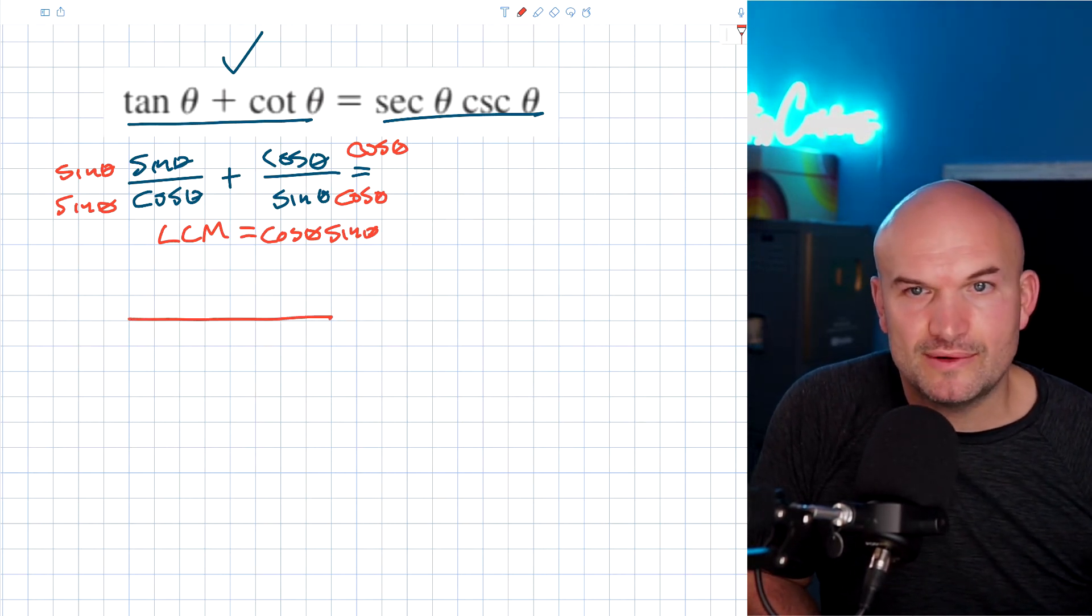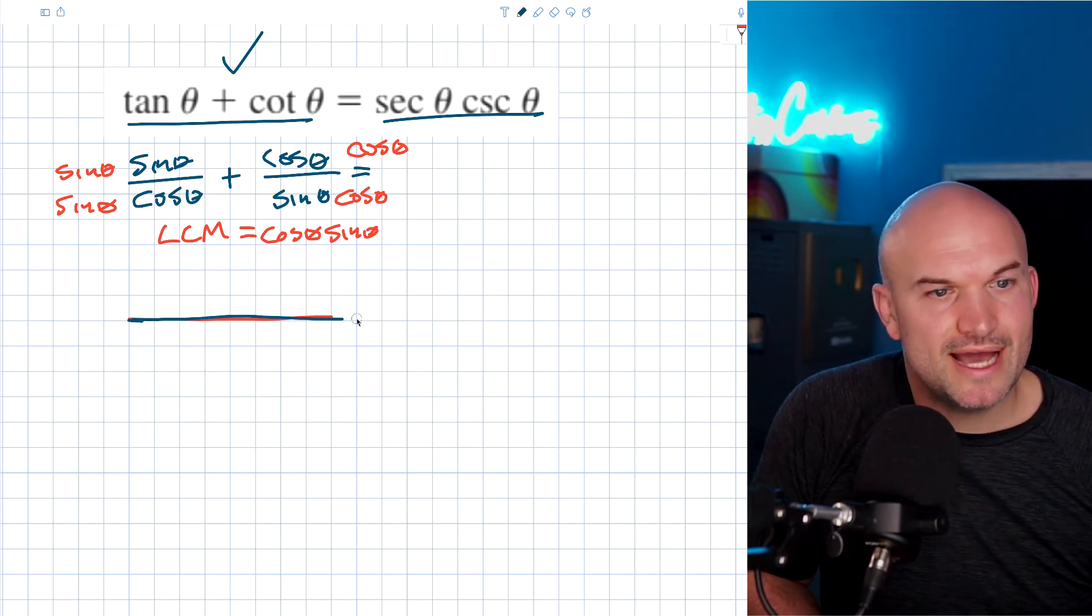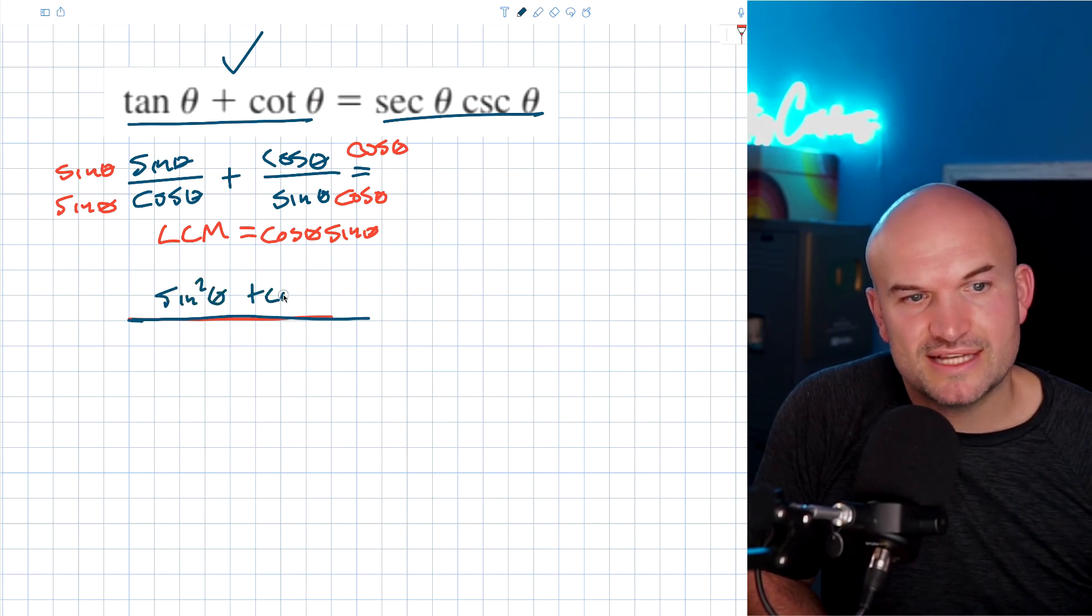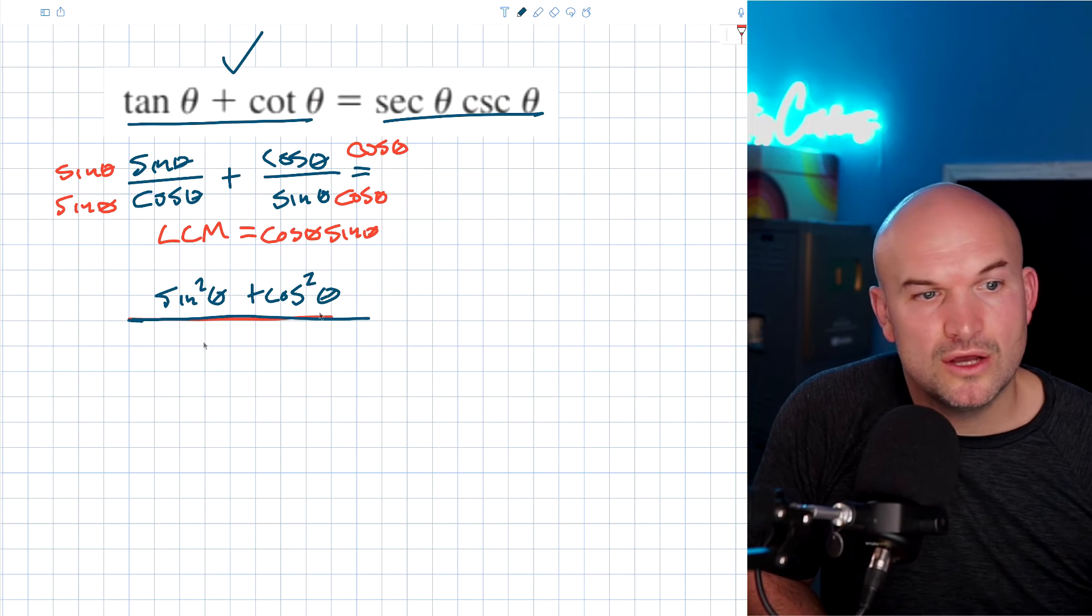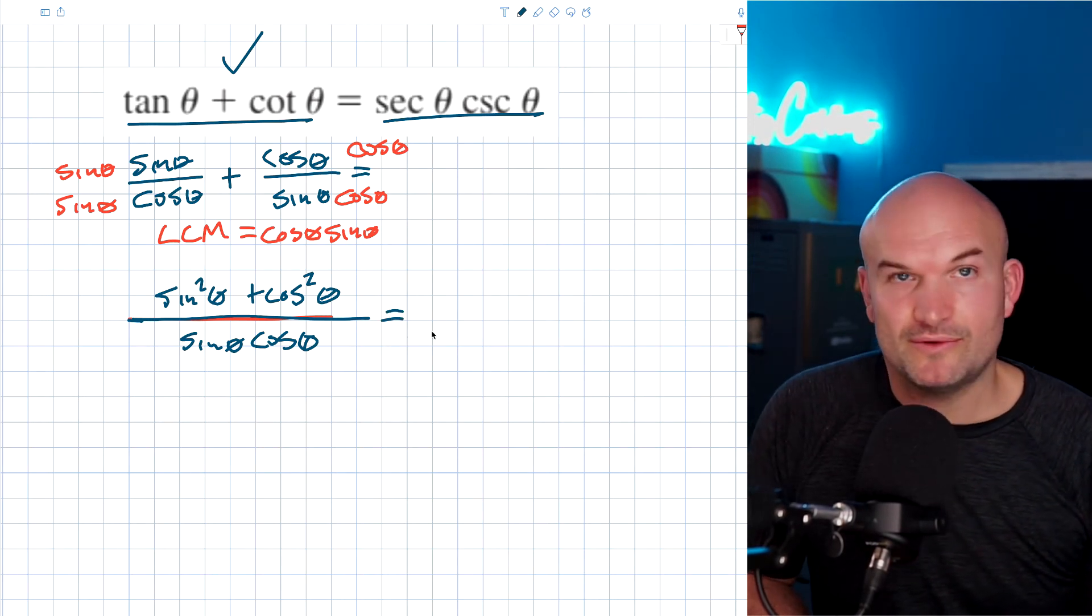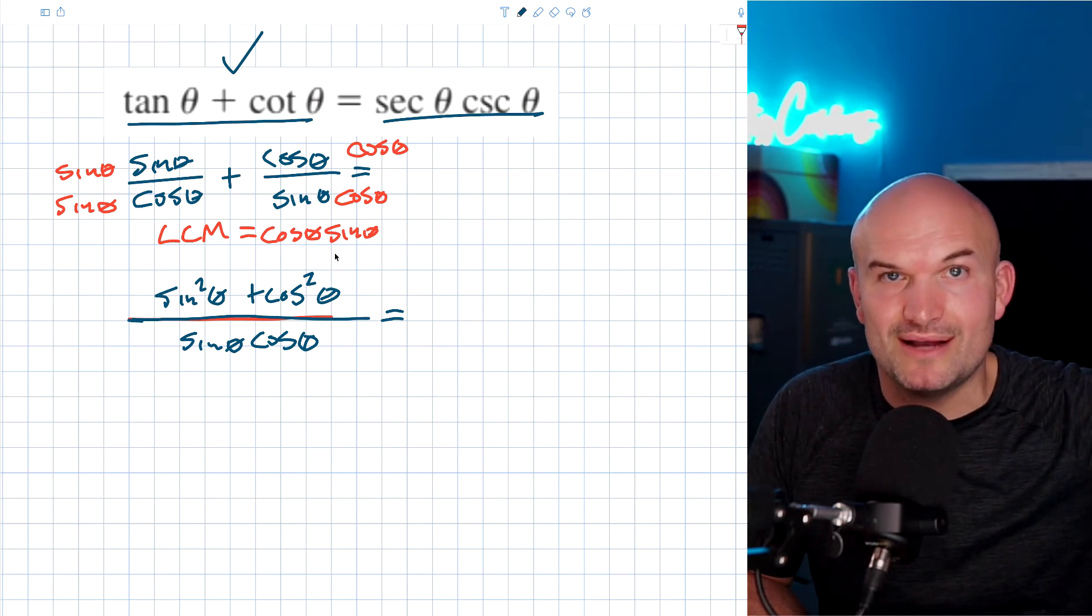So I have here, I have sine squared of theta plus cosine squared of theta all over sine of theta cosine of theta. And then, that's still going to be equal on the right-hand side.